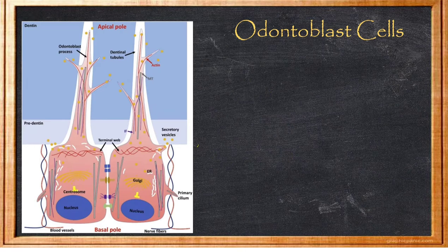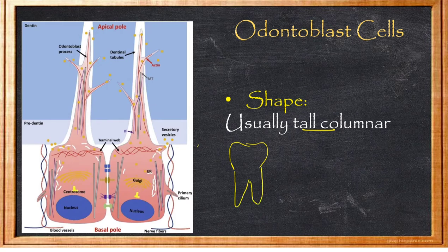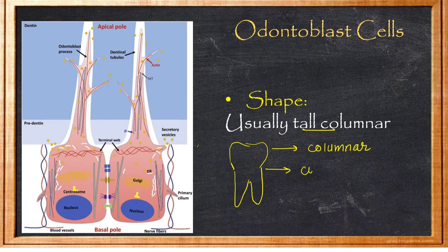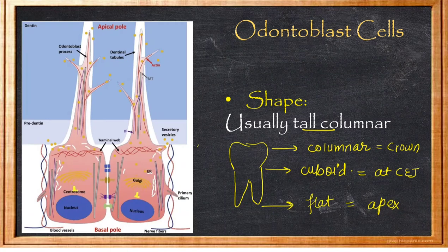The shape of odontoblasts varies by location in the tooth. In the coronal pulp (crown area), they are tall columnar. As you move toward the root, they become cuboidal in shape. At the root apex, they become flattened. So from crown to apex: tall columnar → cuboidal → flattened. They are generally referred to as tall columnar cells.